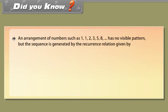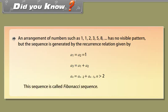Did you know: An arrangement of numbers such as 1, 1, 2, 3, 5, 8, and so on has no visible pattern, but the sequence is generated by the recurrence relation: A1 = A2 = 1, A3 = A1 + A2, AN = AN−2 + AN−1 for N > 2. This sequence is called the Fibonacci sequence.